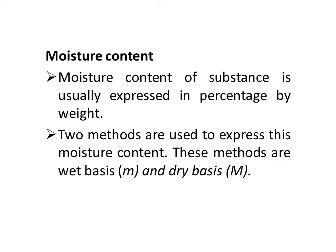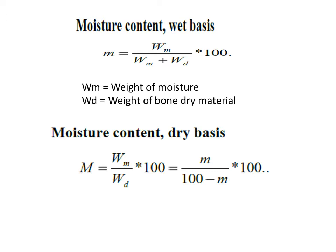There are two methods to express moisture content: on a wet basis and on a dry basis. For moisture content on a wet basis, the formula is: M = (WM / (WM + WD)) × 100, where WM is the weight of moisture and WD is the weight of bone-dry material.